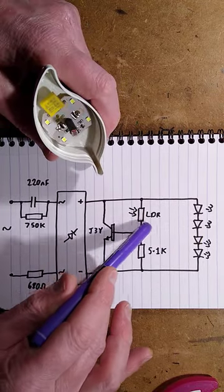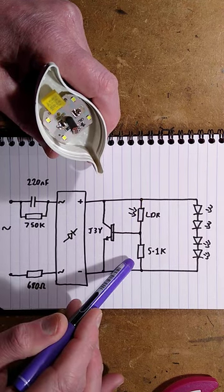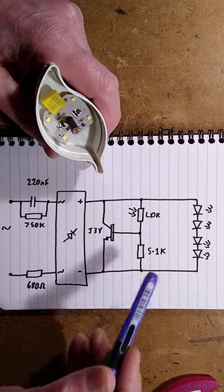When it's bright enough, this LDR light-dependent resistor passes enough current to turn this transistor on that basically just shorts out the power supply rails and the LEDs go off.